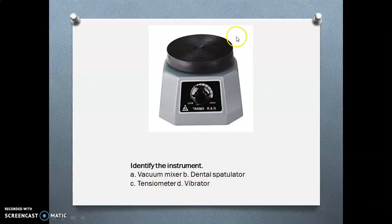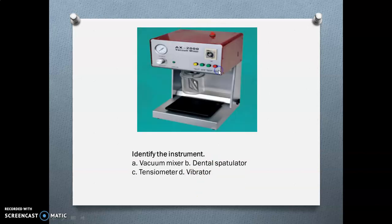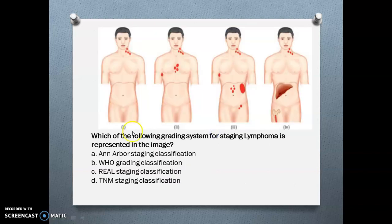Identify this instrument: it is your vacuum mixer and tento-spatulator. This is your vibrator and this is your vacuum mixer. Both instruments are used for mixing dental plaster and dental stone.